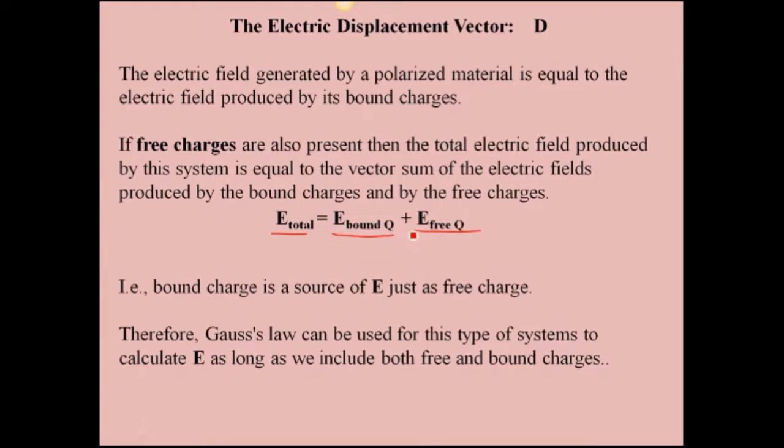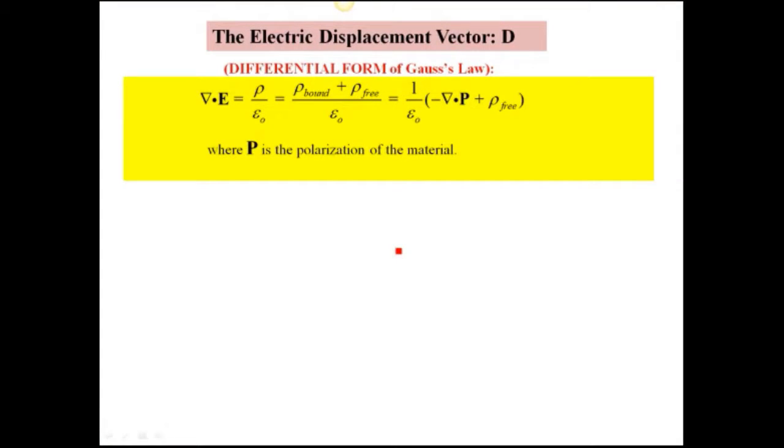The thing to remember is that we know this is a source of E field, but also the bound charge is a source of E field. So what that means is that we can use Gauss's law as long as we take into account both types of charge. Quite often we'll have the symmetries needed in both cases where we can use Gauss's law. So the electric displacement vector comes out of this approach.